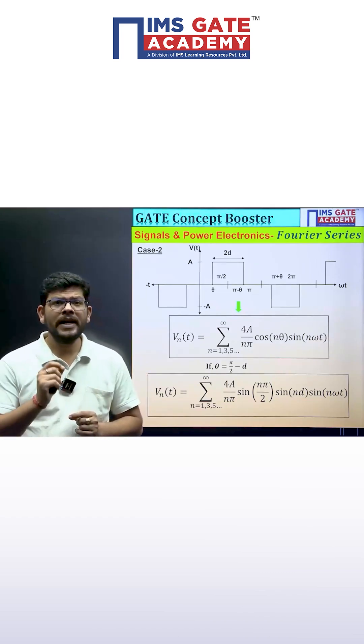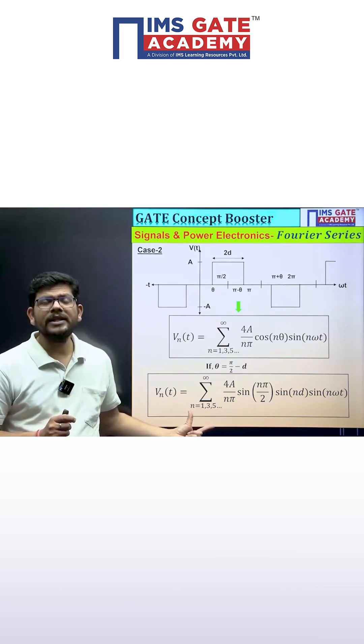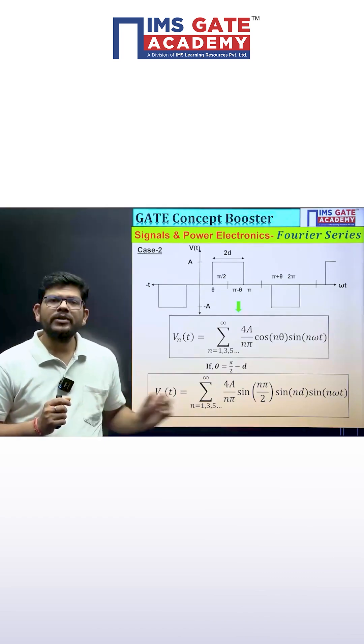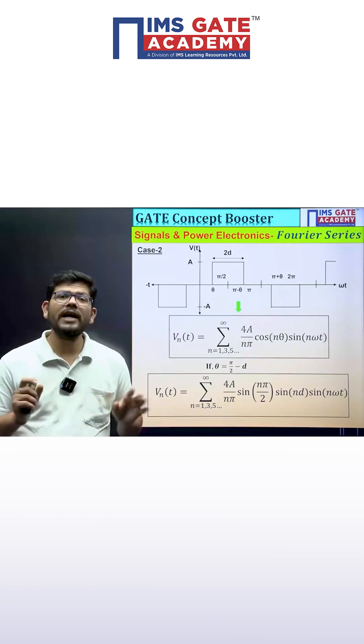Theta can also be replaced by pi by 2 minus d, and then it will give you a famous expression that we will be using for inverter cases and many other cases. Then the expression becomes four a upon n pi sine n pi by 2 sine n d sine n omega naught t, and only odd harmonics will be there.